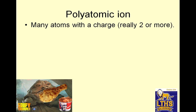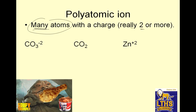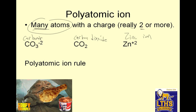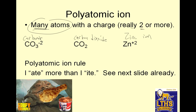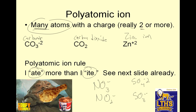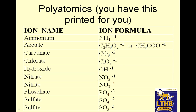Polyatomic ions — many atoms with a charge, usually just two or more. To name these, you have to memorize them. We've learned a bunch of these, like carbonate. Now the polyatomic ion rule — "ate" has more oxygen than "ite": nitrate is NO3 negative, nitrite is NO2 negative. Sulfate is SO4 2-minus, sulfite is SO3 2-minus. So "ate" is one bigger than "ite". Sulfate is one bigger than sulfite. If there's a phosphite — and there is — it would be PO3 3-minus.